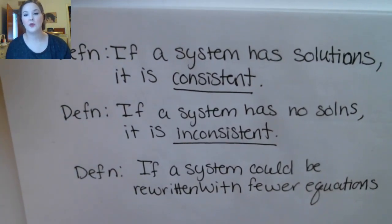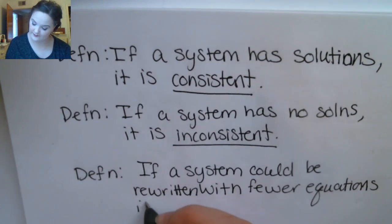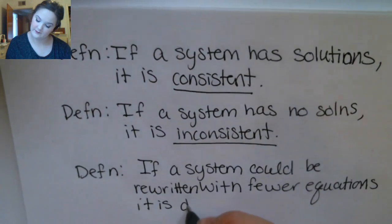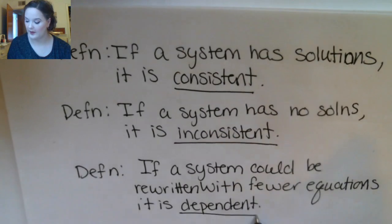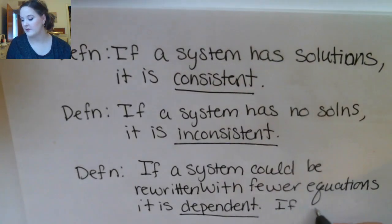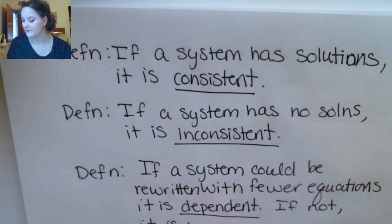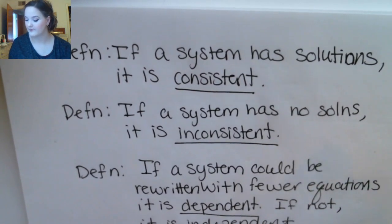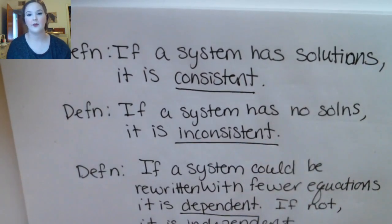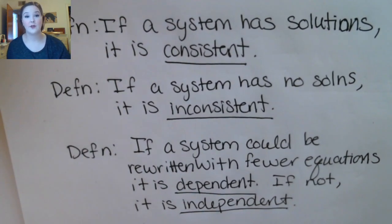If you could rewrite a system with fewer equations, we call that dependent. If that's not the case, we say it is independent. Let's look at how this looks for a system of two equations and two variables.